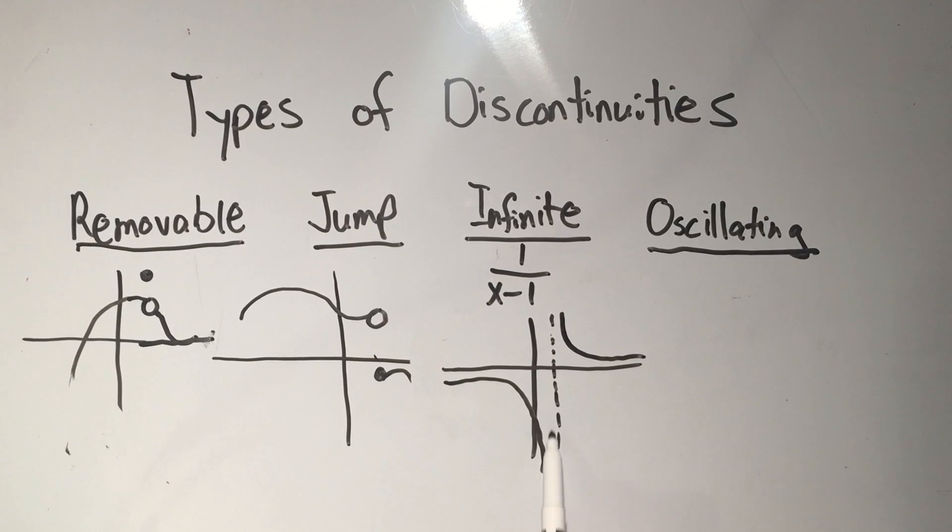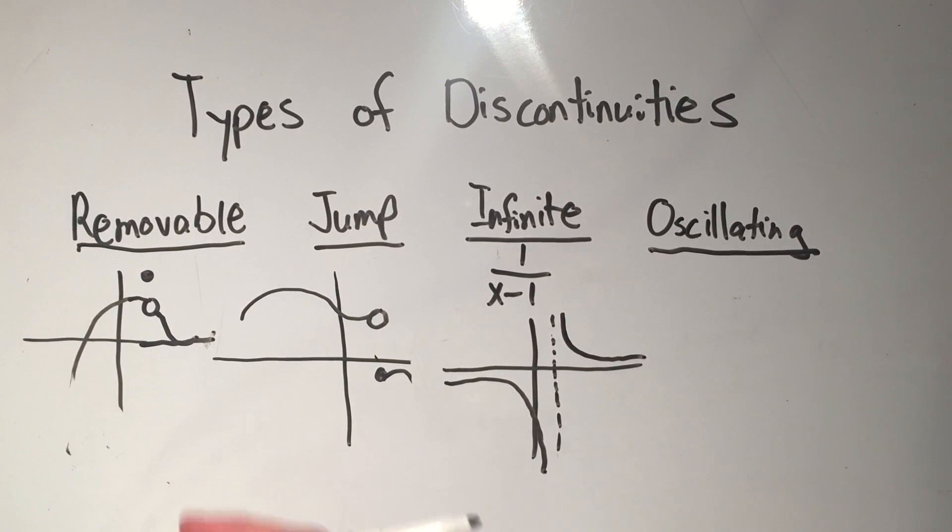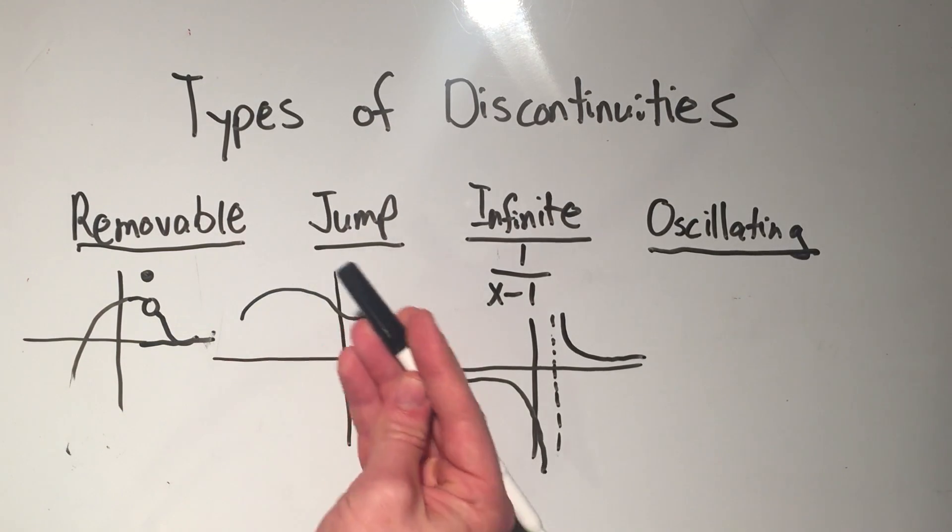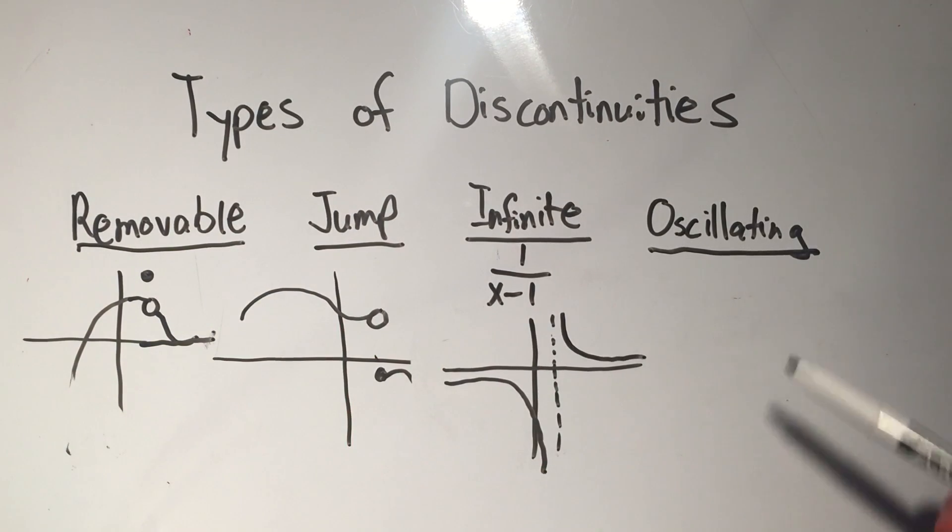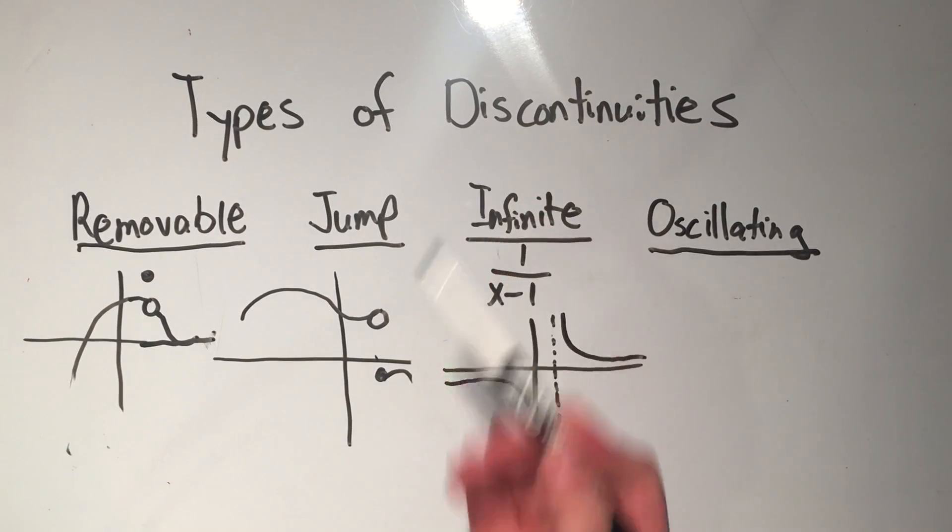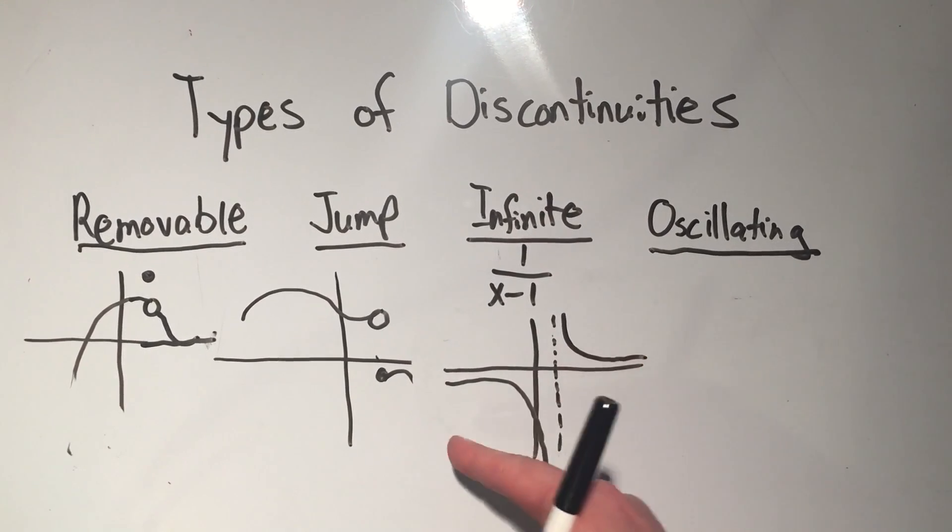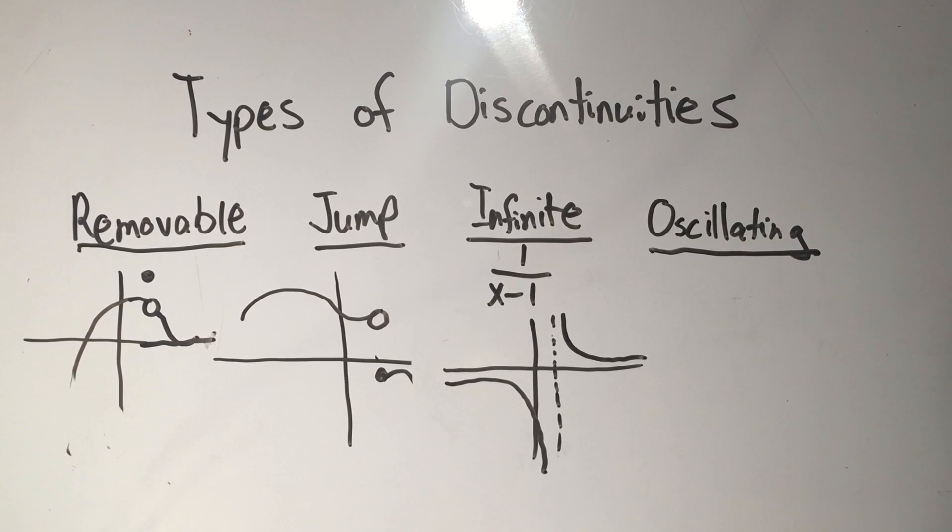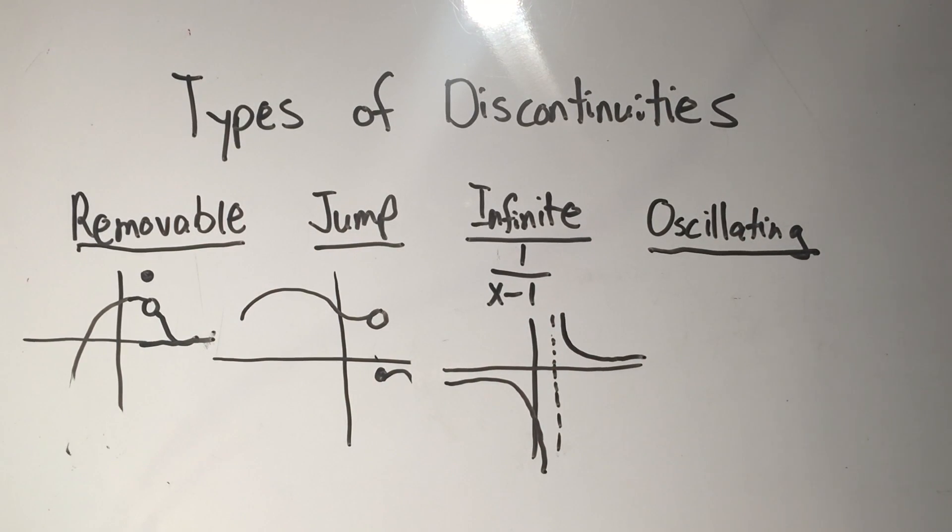And you'll see that this function is not continuous where the asymptote is. So if I took the limit as x approached 1 from the left, I'd get negative infinity. If I took the limit as x approaches 1 from the right, I'd get positive infinity. Since the left-hand limit does not equal the right-hand limit, the limit does not exist. And if the limit doesn't exist, you can't be continuous.